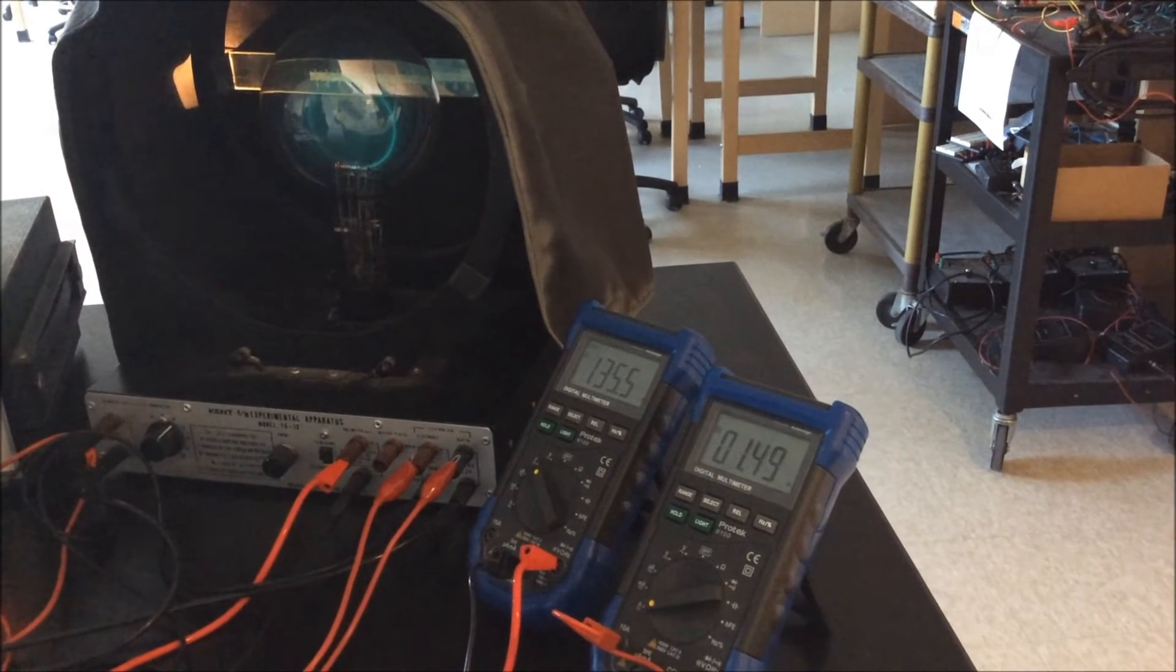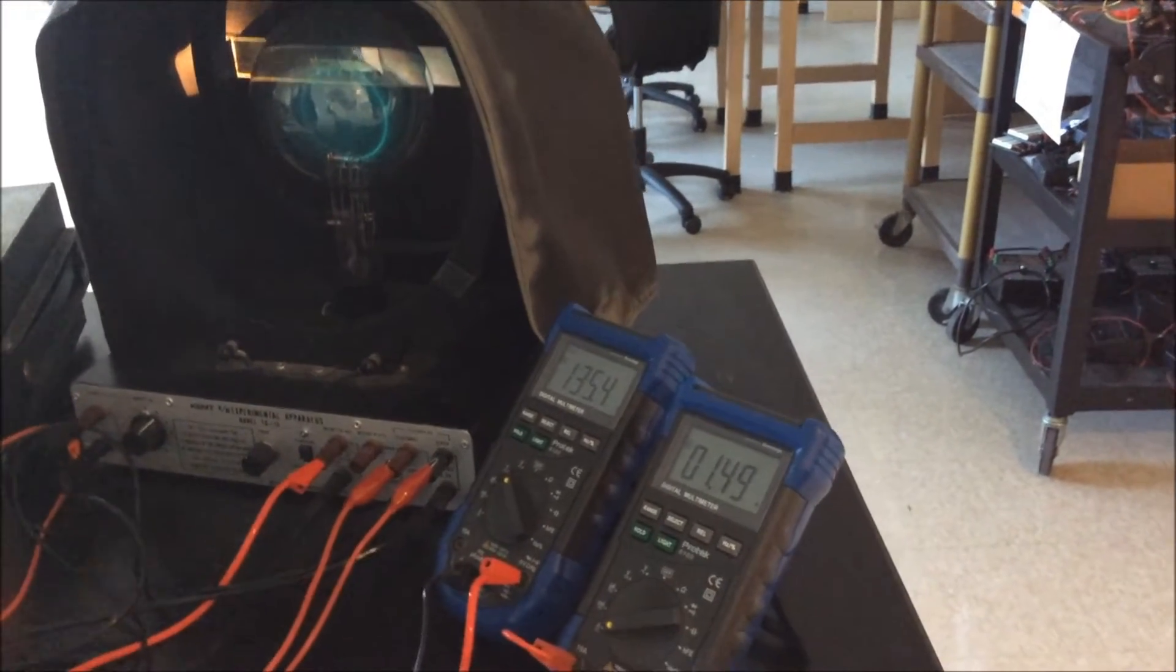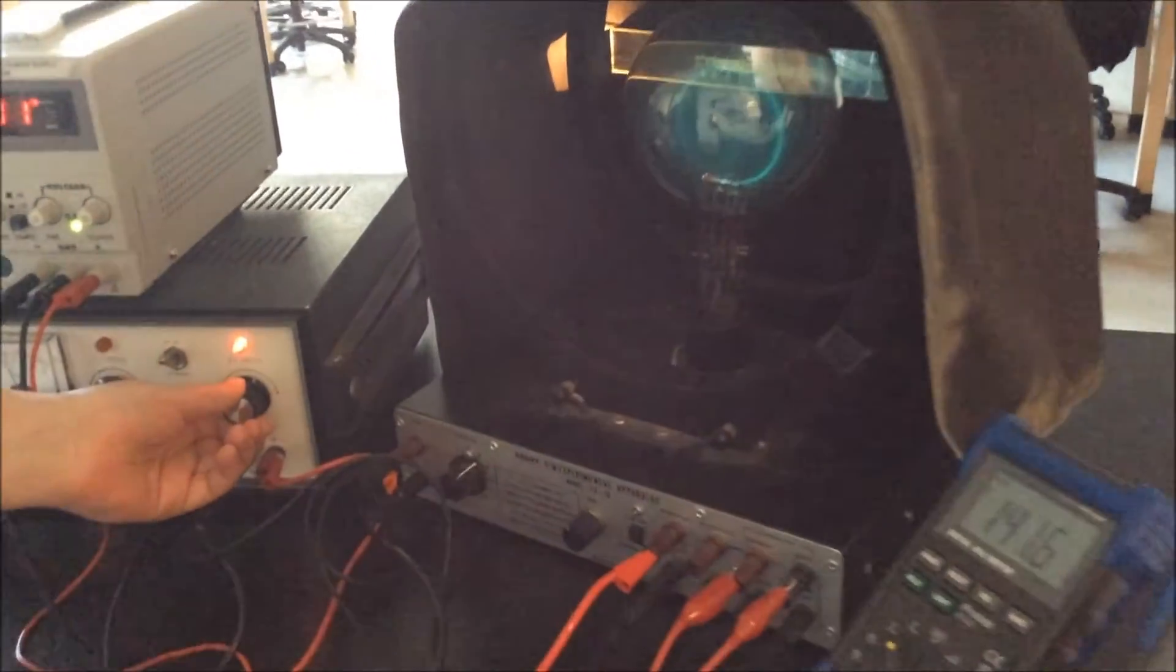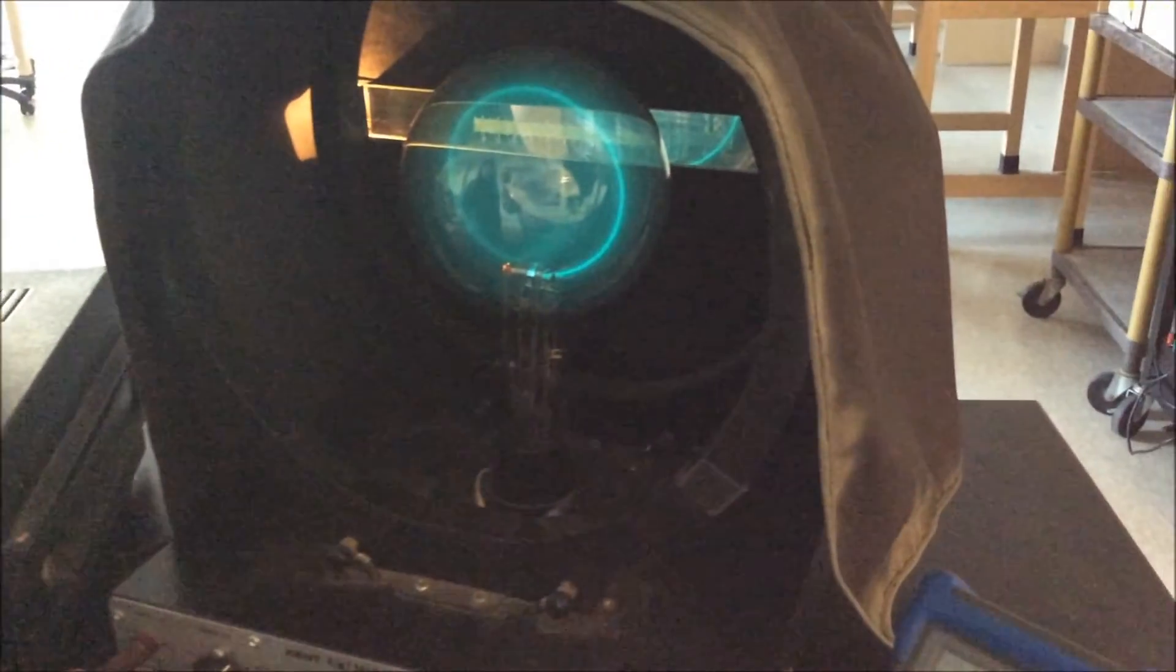You're going to fix the current so that it is about 1.5 amperes. And as you can see, as you change the voltage, the radius of the circle changes.